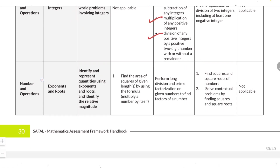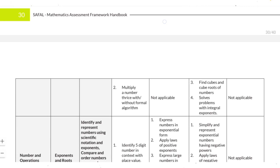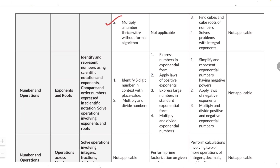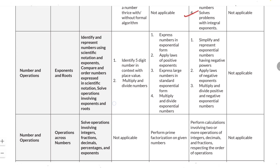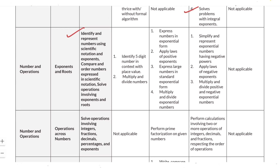The next subtopic in Number and Operations is exponents and roots. You need to identify and represent quantities using exponents and roots and identify relative magnitude. Questions include: finding the area of a square of given length using a formula; performing long division and prime factorization to find factors; finding square and square root of numbers; solving contextual problems using square and square root; multiplying a number three times with or without formal algorithm; and finding cube and cube root of numbers, and solving problems with integral exponents.